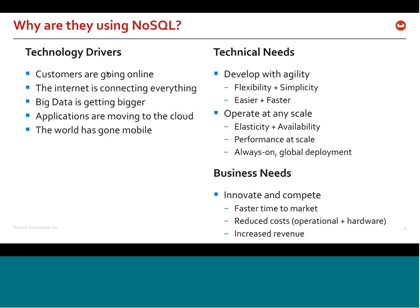One of my favorite examples is Pokémon Go. That team had no way of predicting how fast their application was going to need to scale. One of the things that helped them was the fact that they had implemented using Couchbase, so they could quickly scale their cluster in response to increasing customer demand — all driven by the requirements within the digital economy.